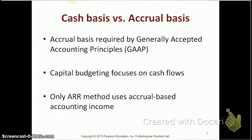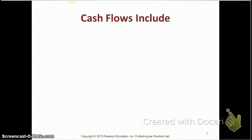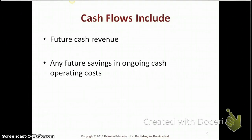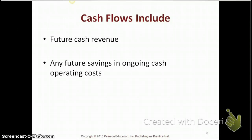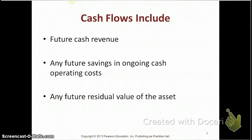How would you remember which method uses accounting income? It's ARR, which stands for accounting rate of return — that's the one that uses accounting income. When looking at cash flows from an investment, they would include future cash revenue. Any future savings on cash costs will also be considered a cash inflow. Also, if there's a residual value of an asset, that would also be considered a cash inflow.